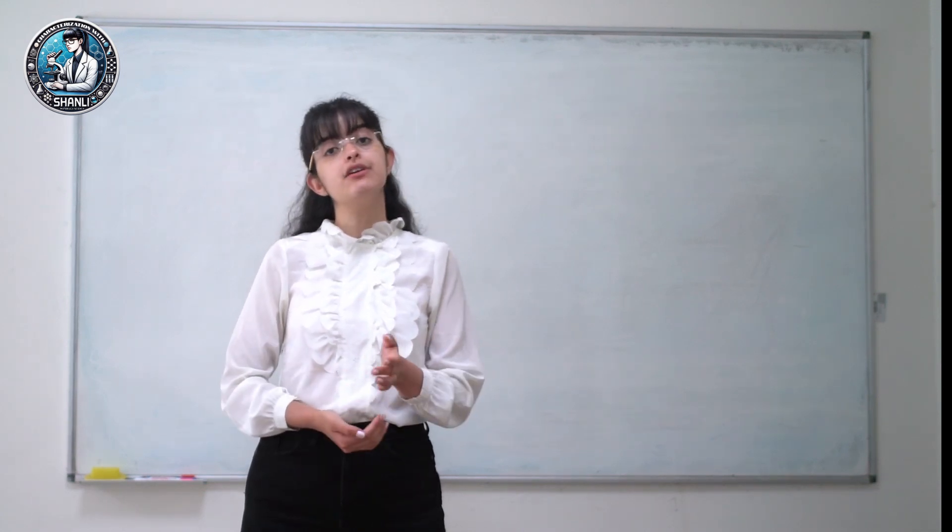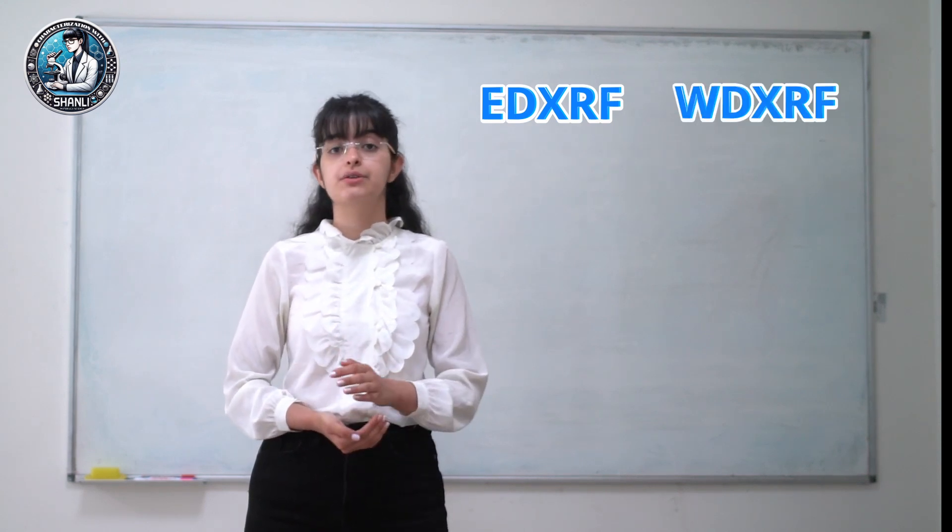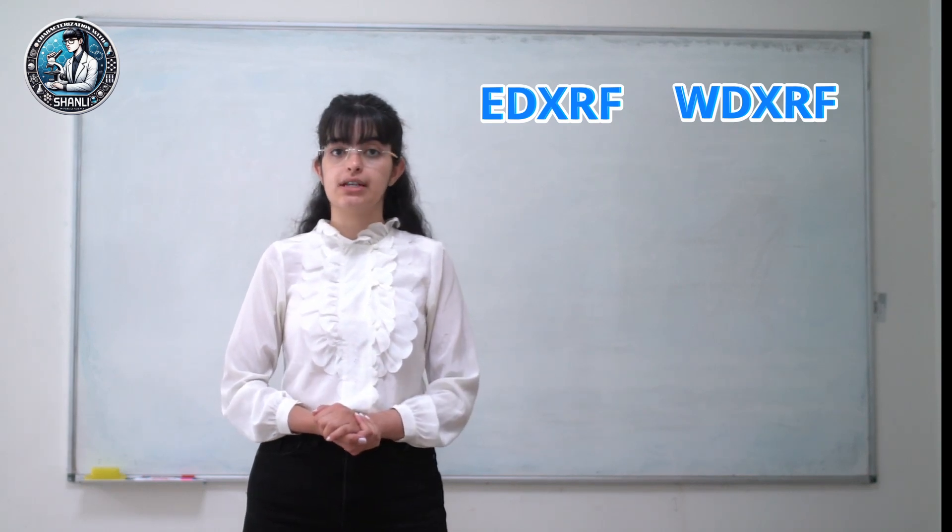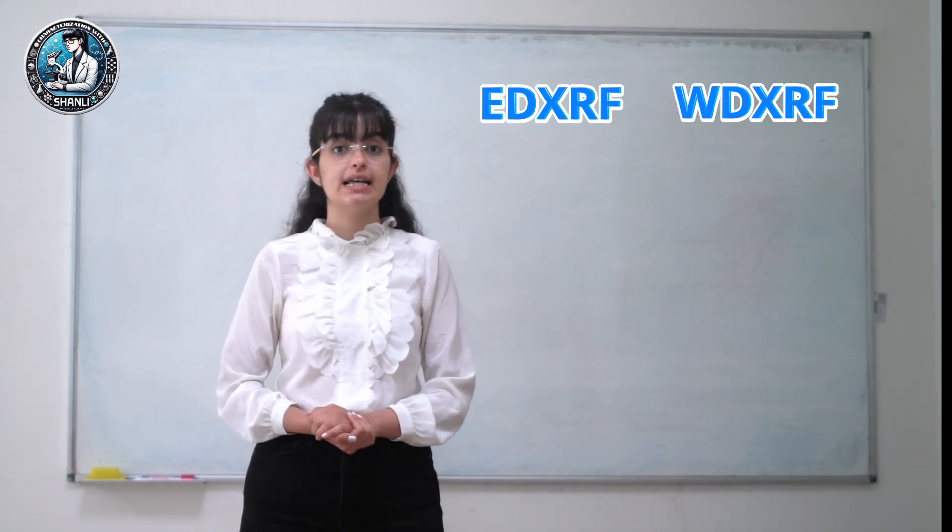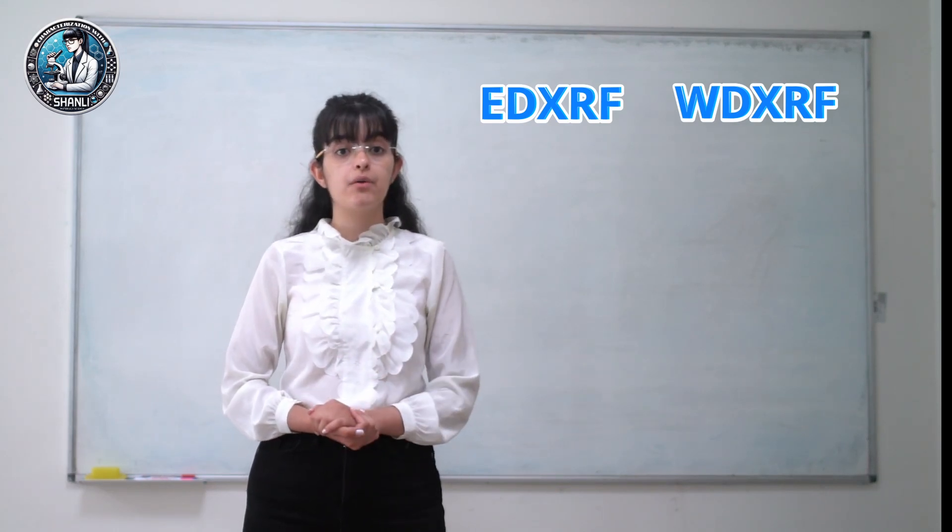The first one is energy-dispersive XRF, EDXRF and the second one is wavelength-dispersive XRF, WDXRF. The choice of the spectrometer crucially includes the range of detectable elements in our sample and also the sensitivity of our analysis.